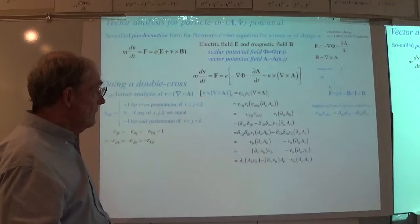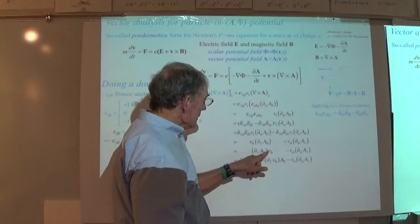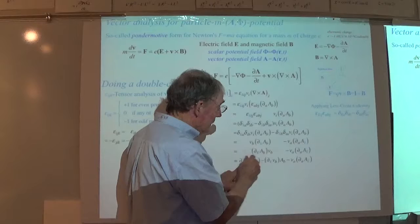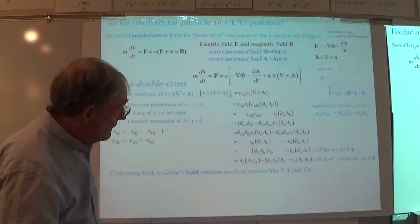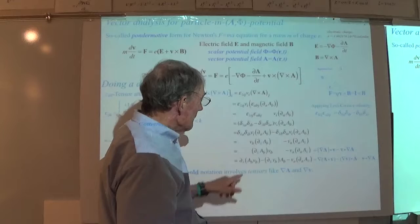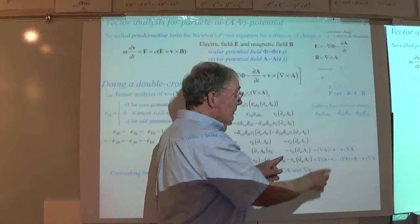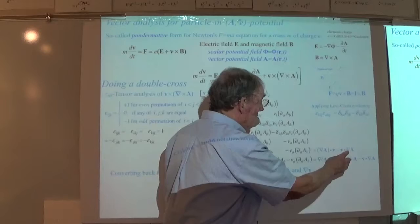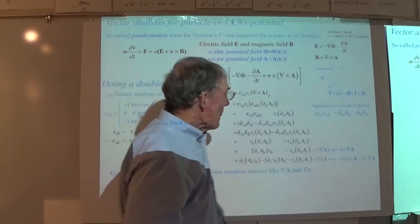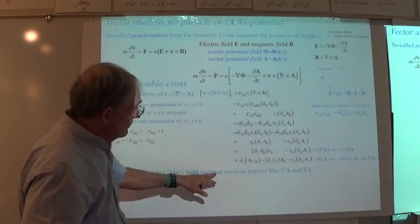Once you have that, you can write it in Gibbs notation, which most people are more familiar with — though the index notation is more powerful. This one I would write as grad(A·B), and then subtracting V·(grad A), where the whole grad A is a tensor. That notation doesn't handle tensors perfectly well, but it's a nice shorthand.